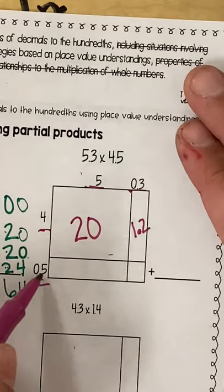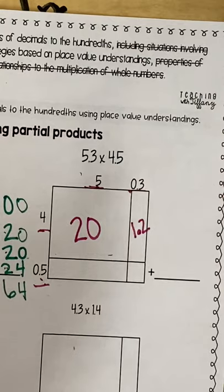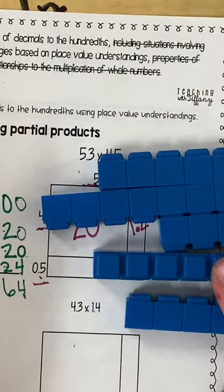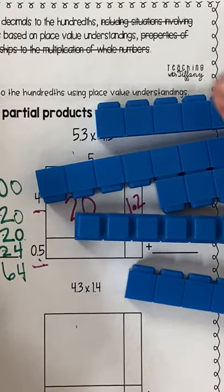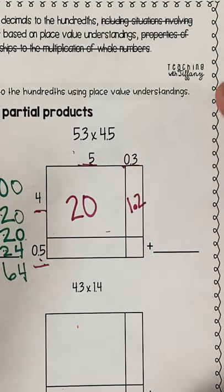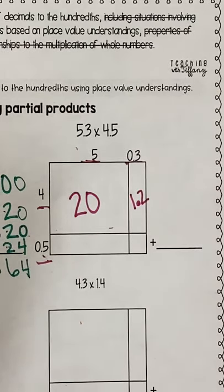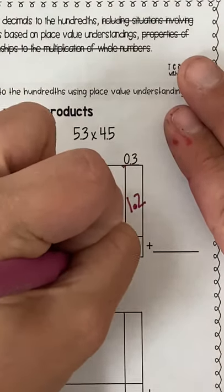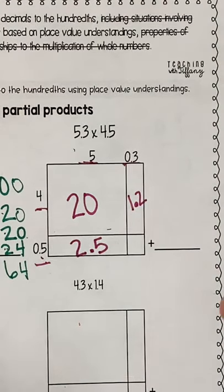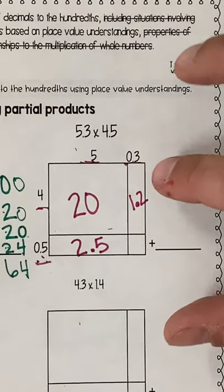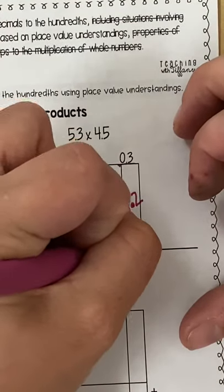Next, I have 5 times 5 tenths. That would be taking 5 of these little rods and counting it up 5 different times. If I did that, 5 times 5 would be 25. So if I have 25 tenths and I want to regroup and exchange 10 tenths for a whole, I would end up with 2 whole units and 5 tenths. Next, I have 3 tenths times 5 tenths. If I did 3 tenths times 5 tenths, I would end up with 15 hundredths.